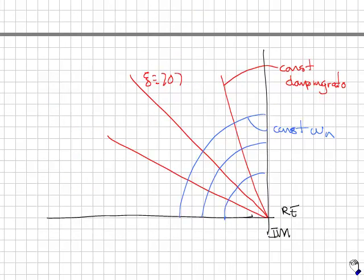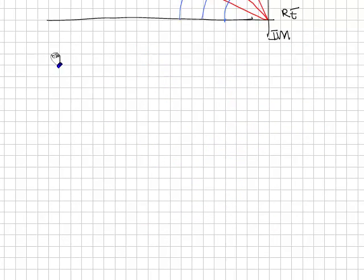Sometimes you'll see them draw a grid where there are lines of constant natural frequency. Those are the blue lines. So all poles along these blue lines have the same natural frequency. The red lines correspond to constant damping ratio. All poles that lie on this line have a damping ratio of 0.707.